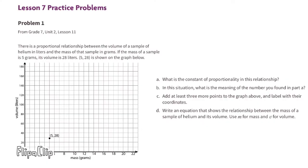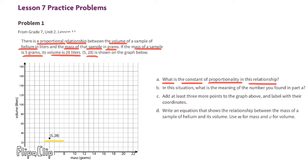From 7th grade unit 2 lesson 11: There is a proportional relationship between the volume of a sample of helium in liters and the mass of that sample in grams. If the mass of a sample is 5 grams, its volume is 28 liters. The point is shown on the graph below. Part a: What is the constant of proportionality in this relationship?